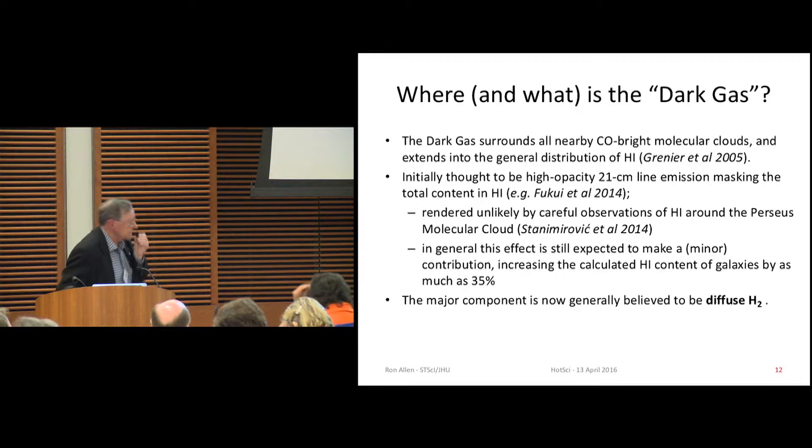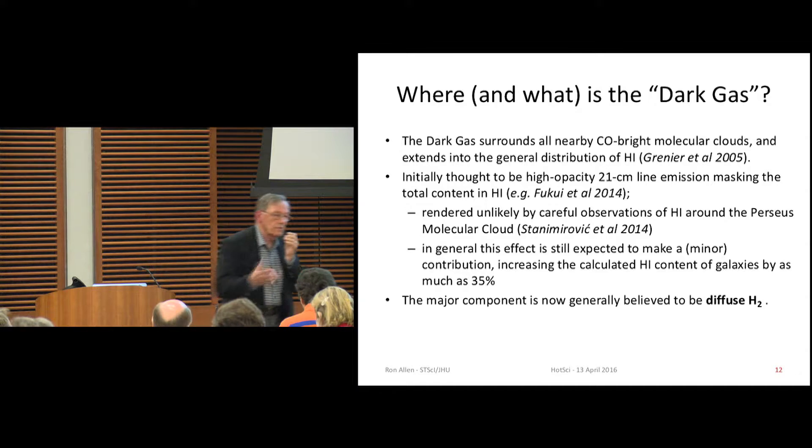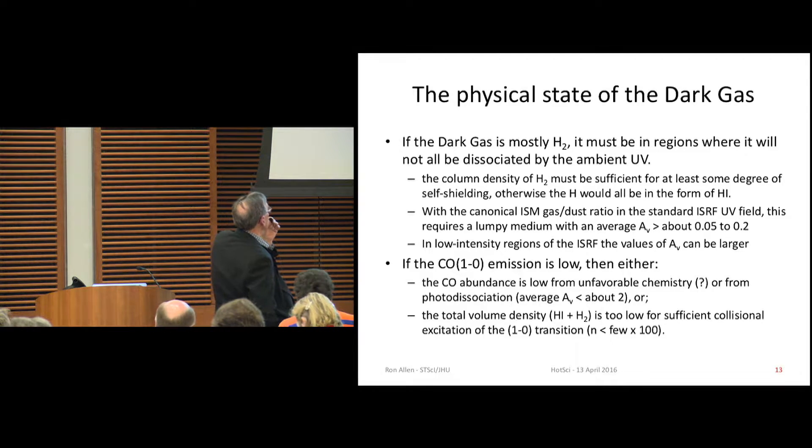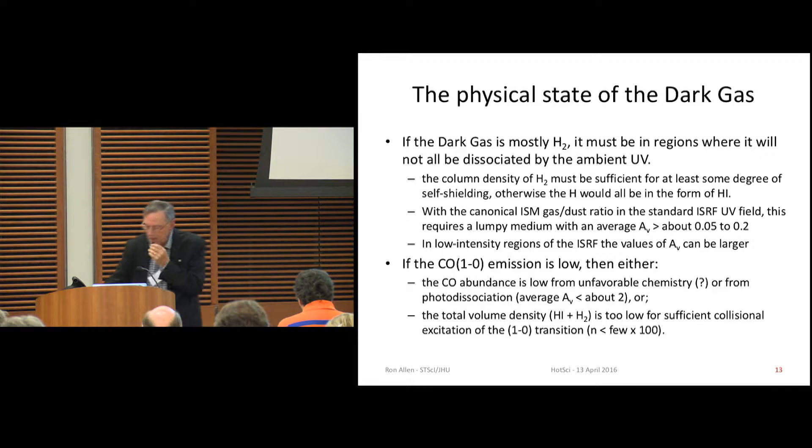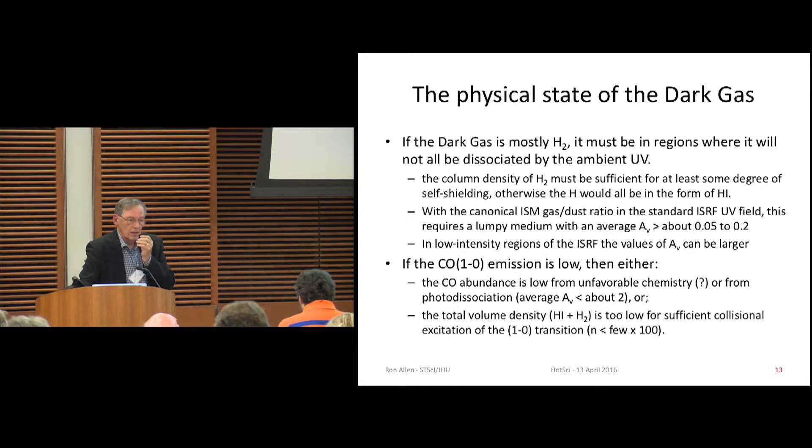Okay, the state of this gas is clear that it's got to be in some physical state that we haven't been able to detect. It must be in regions where it will not all be dissociated. Otherwise, we would see it in different tracers. It's got to be dust to gas ratios. It needs to be a lumpy medium with a low average AV. And the CO emission is low, either because the abundance is low, or because the total volume density is too low. It's got to be one or the other. So this leads you to pretty well limit yourself as to what this could be.